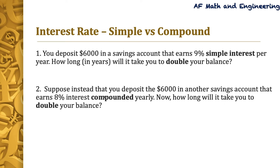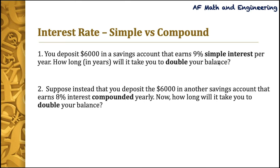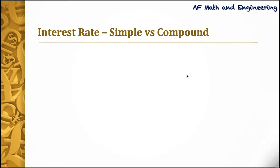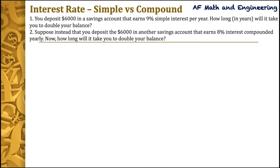In both questions, we are going to deposit the same amount of money, which is $6,000. In each question, we'll have a different interest rate — 9% in the first question and 8% in the second. The first question uses simple interest, while the second uses compounded interest. The only thing we don't know is time. We want to know how long it will take to double our deposit with two different interest rates. Let's put the question at the top and start solving it.